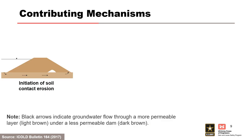Generally, soil contact erosion is considered a contributing mechanism. For example, it can lead to the formation of a roof or a pipe for concentrated leak erosion. Several examples of how soil contact erosion acts as a contributing mechanism are shown in the figures on this slide.